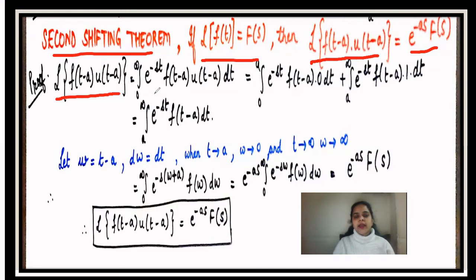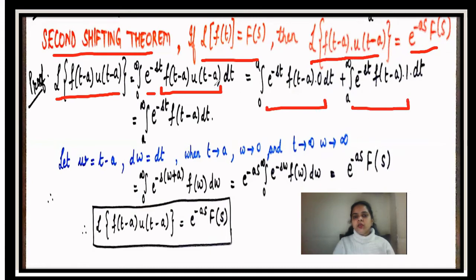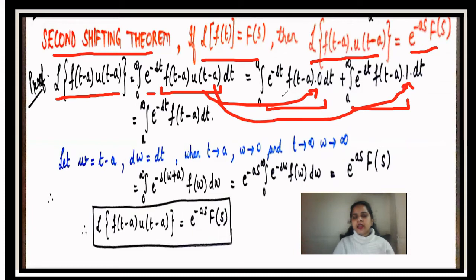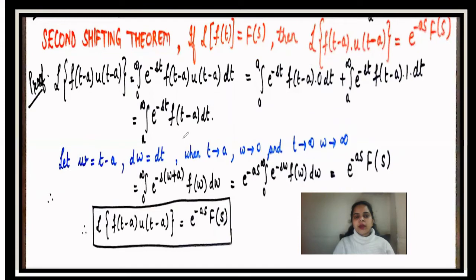To prove the second shifting theorem, we apply the basic definition: the Laplace of f(t - a)·u(t - a) is the integral from zero to infinity of e^(-st)·f(t - a)·u(t - a) dt. Again we break the interval into two parts: from zero to a, where u(t - a) is zero, and from a to infinity, where u(t - a) is one. The first integral vanishes, leaving only the integral from a to infinity of e^(-st)·f(t - a) dt.